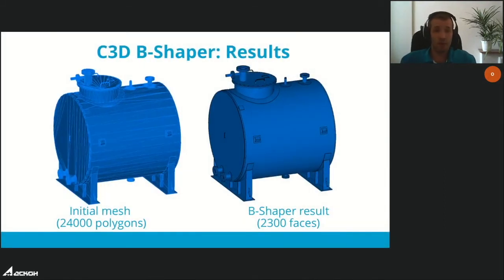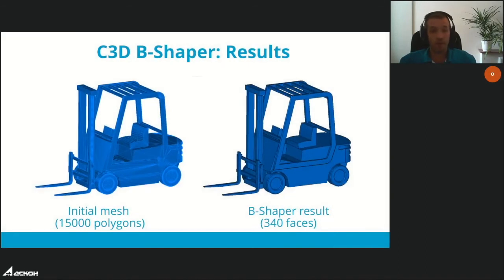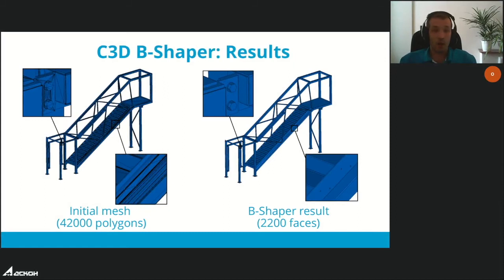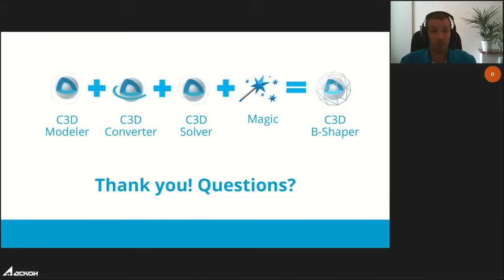Here are examples of B-Shaper conversion results. A tank model with source mesh of more than 24,000 polygons is transformed into 2,300 B-rep faces. A polygonal mesh of a lifter vehicle shows a more impressive result: more than 20,000 polygons transformed into a model with only 314 faces. An engineering model also demonstrates a good result. Future work includes advancing the automatic segmentation algorithm and improving construction of free-form NURBS surfaces.